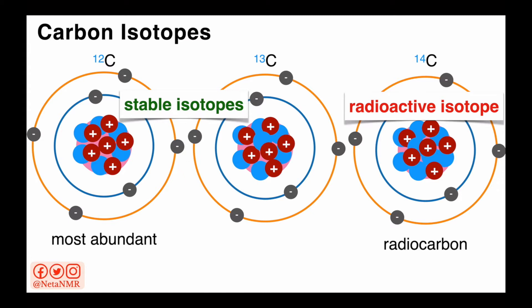Carbon-12 is the most abundant carbon isotope, with a natural abundance of about 98.89%. It is followed by carbon-13, with a much smaller natural abundance of only about 1.1%. These are stable isotopes of carbon. Carbon-14 is a radioactive isotope and it is found in trace amounts. This is the element from which the name of the method — radiocarbon dating — comes from. So that's radiocarbon: the isotope of carbon that has 6 protons and 8 neutrons in the nucleus.